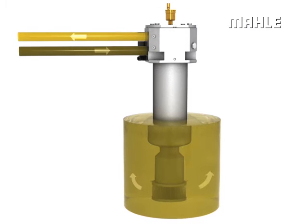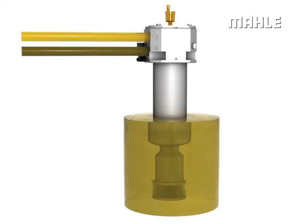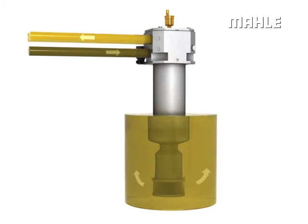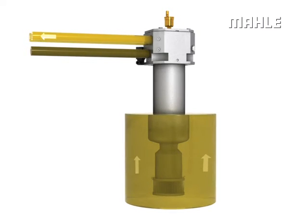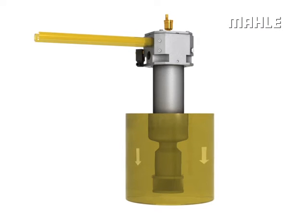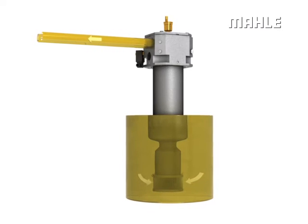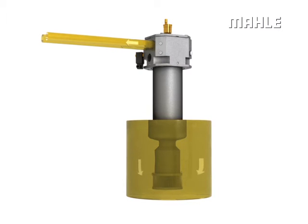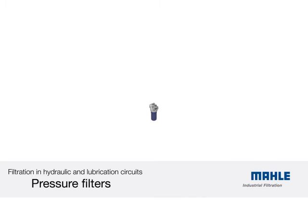As a result, oil that has undergone high-efficiency fine filtration is delivered to the suction pump under positive pressure. In the event the return flow is interrupted briefly, the pump can continue to draw oil directly from the tank through a valve and a coarse protective filter.